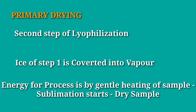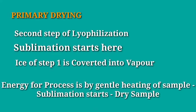Primary drying is the second step of lyophilization, where sublimation starts — that is, conversion of solid ice to vapor takes place without conversion into liquid. The energy for the process is given by gentle heating of the sample, and we can produce a dry sample. Primary drying is an important step in lyophilization.